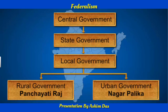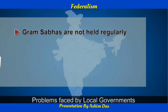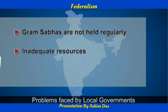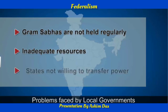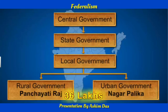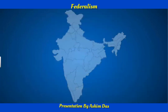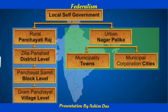However, it faces a few problems. For instance, Gram Sabhas are not held regularly, and adequate resources are not given to local bodies. In certain cases, state governments have not transferred power to local governments. Yet this system has 36 lakh representatives in rural and urban local governments and significant participation of women. Despite certain problems, the presence of local governments and decentralization of power has helped strengthen democracy in the country.